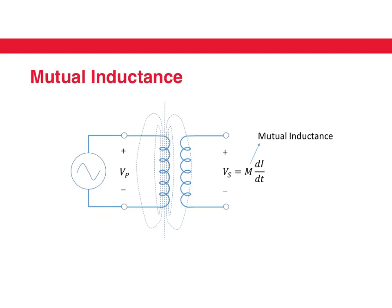So in other words, a change in the current in the first coil produces a voltage in the second coil. The ratio of the voltage induced on the second coil and the rate of change of the current in the first coil is called the mutual inductance, given by M. One way to characterize coils which are very close to each other is by this idea of mutual inductance.